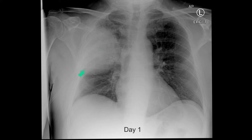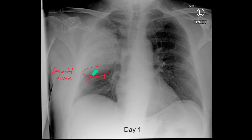There is a line here and a line here, but the overall impression is that there's inferior bulging of what looks like a fissure. The horizontal fissure should be in this position, and it's been displaced inferiorly just a little bit. And so this interface here is almost certainly a displaced bulging oblique fissure.